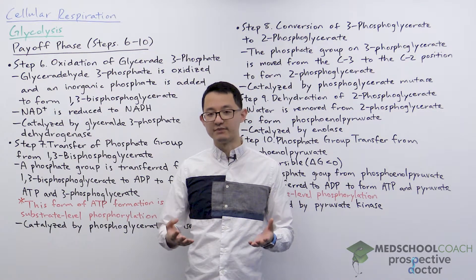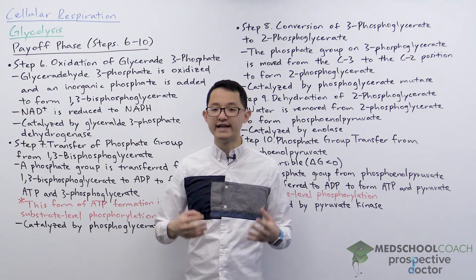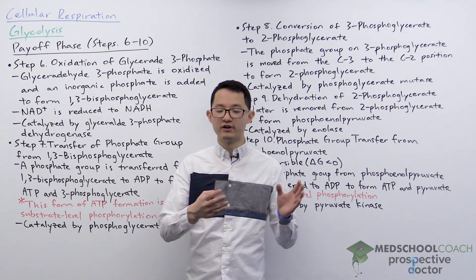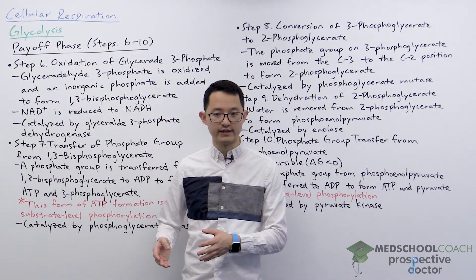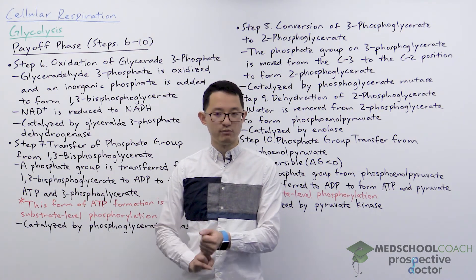In this diagram you can see the summary of the payoff phase of glycolysis — steps six through ten — where the two molecules of glyceraldehyde 3-phosphate are processed to form two molecules of pyruvate. In these five steps we also form four molecules of ATP and two molecules of NADH. The net result of all 10 steps of glycolysis is to convert glucose into two molecules of pyruvate, two molecules of ATP, and two molecules of NADH.